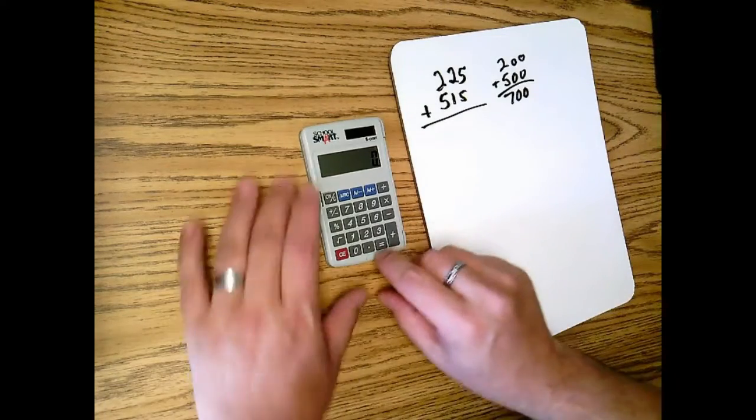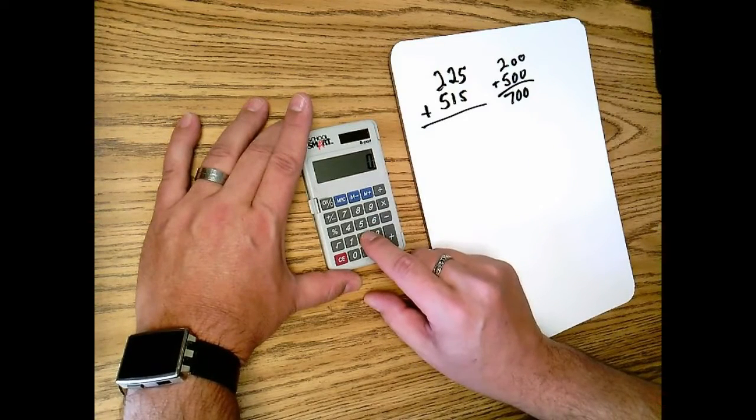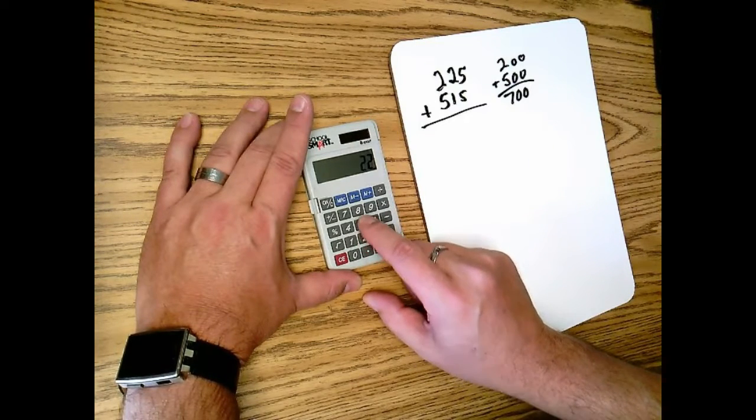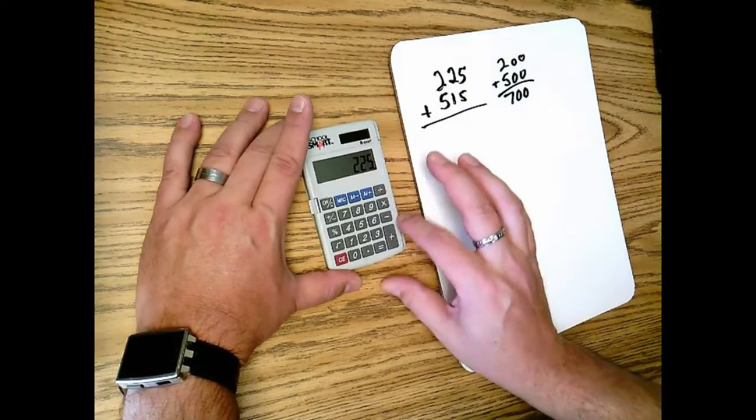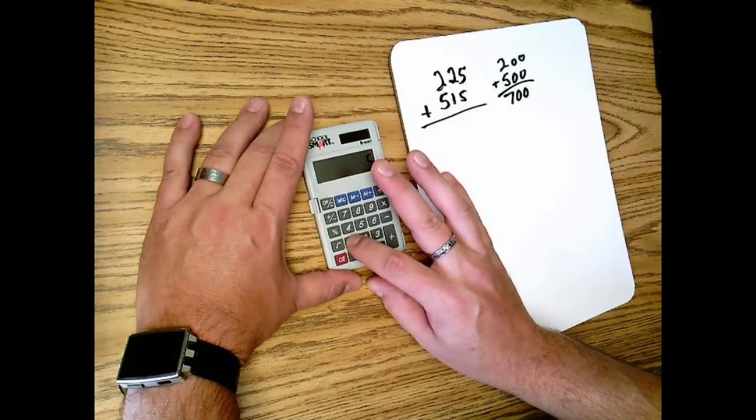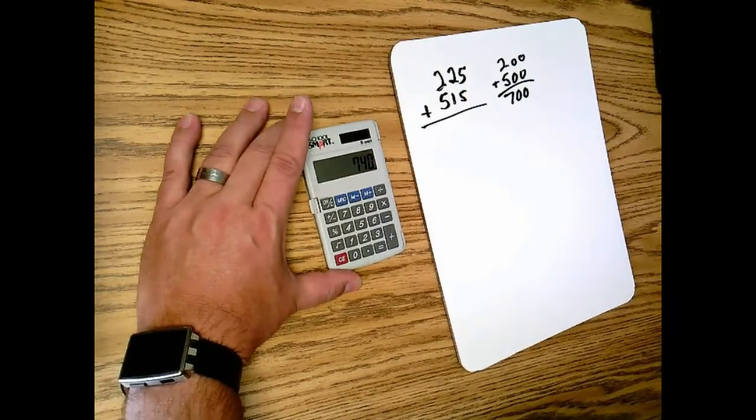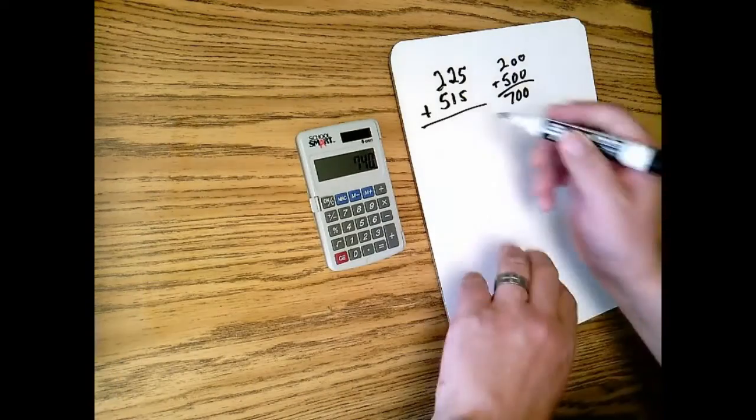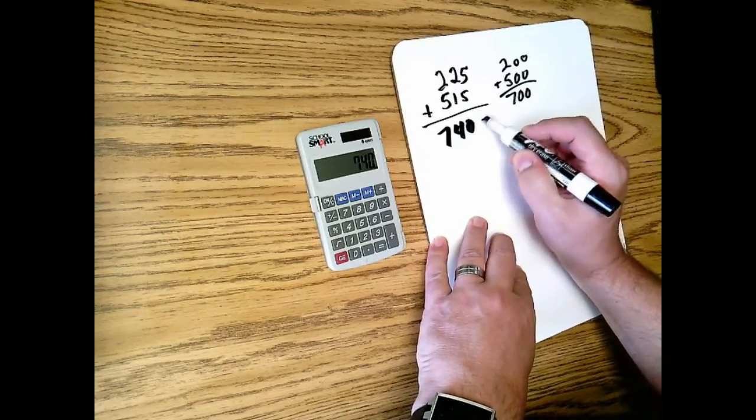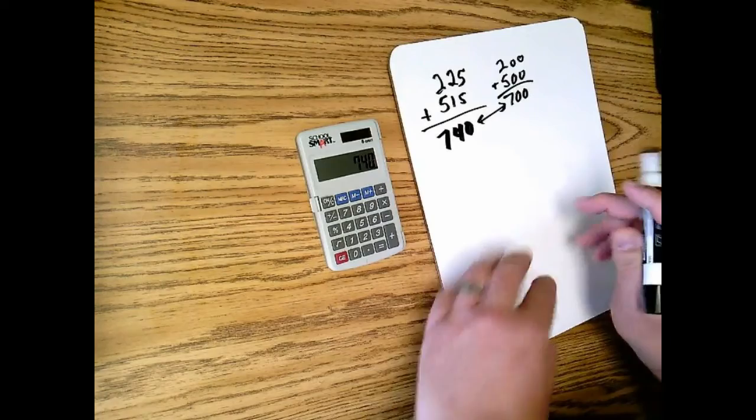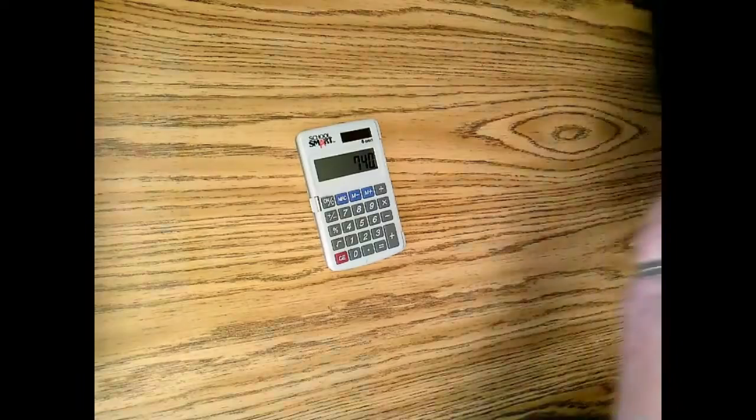So when I'm going to do addition, it really doesn't matter which number I enter in first, but I'll just start with the top one and I hit 225. Of course you see I'm using my index finger, not a thumb and not a pencil, plus 515, and then you hit the equal sign. And my actual sum is 740. You'll see that those are pretty close, and that's good for a smart estimate. So I can trust what I have entered into my calculator.